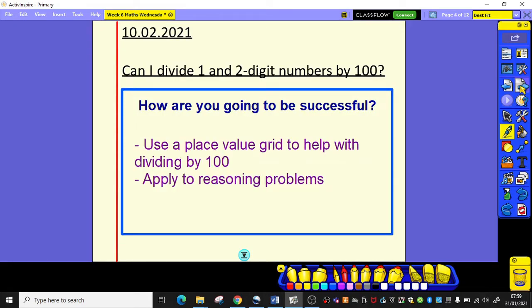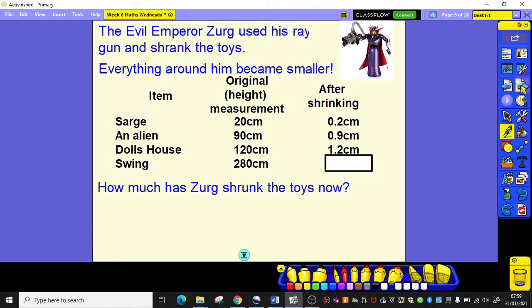Everybody else today, we're going to be building on what we did yesterday. Yesterday, we were dividing 1 and 2 digit numbers by 10. Today, we're going to be dividing 1 and 2 digit numbers by 100. Again, we're going to use the place value grid to help us and we are going to be applying our understanding to some problems. So unfortunately, Zerg is still around and he's still managing to shrink those toys from Toy Story. Again everything has become smaller. However today, what you should notice is that everything hasn't just become 10 times smaller, it's become 100 times smaller.